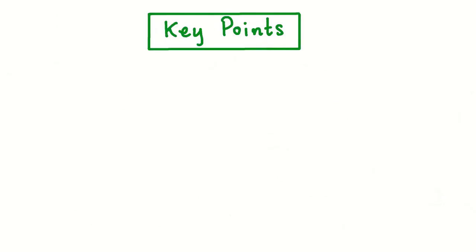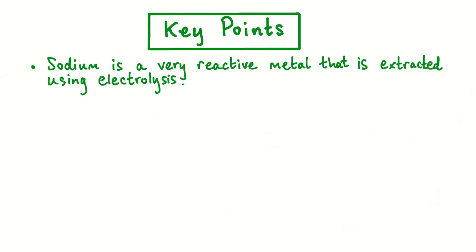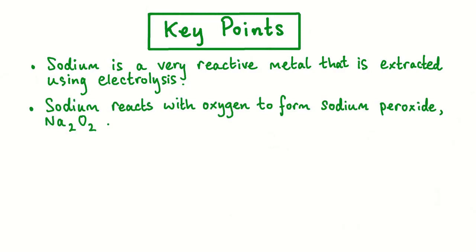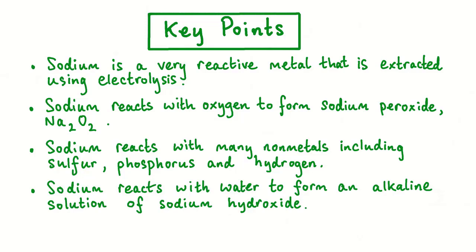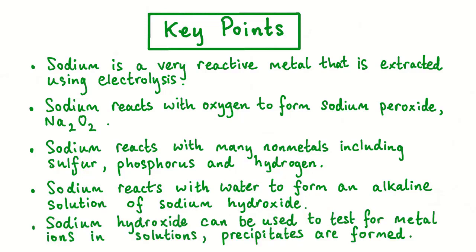We will now review the key points from this video. Sodium is a very reactive metal that is extracted using electrolysis. Sodium reacts with oxygen to form sodium peroxide, which has the formula Na2O2. Sodium reacts with many non-metals including sulfur, phosphorus and hydrogen. Sodium reacts with water to form an alkaline solution of sodium hydroxide. Sodium hydroxide can be used to test for metal ions in solutions. Solid precipitates are formed.